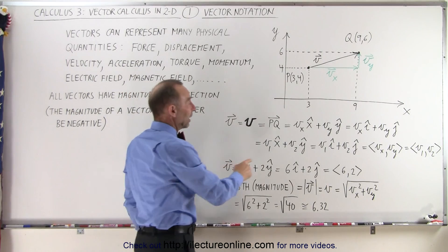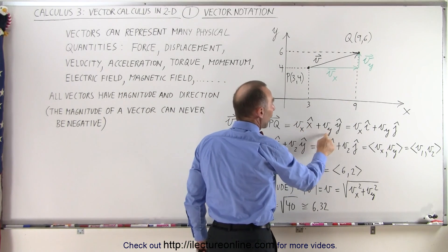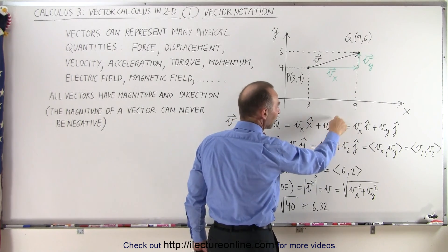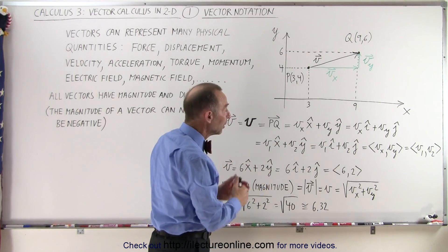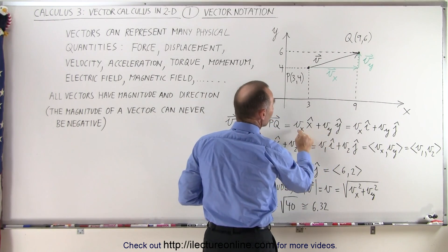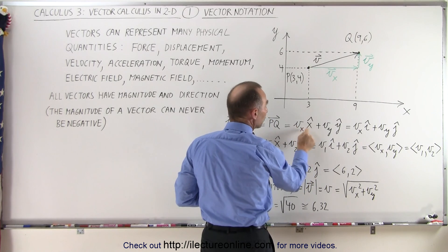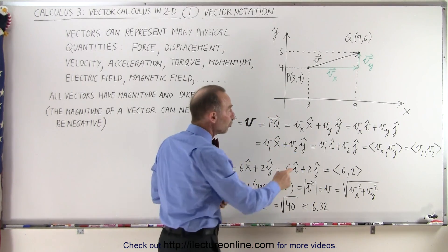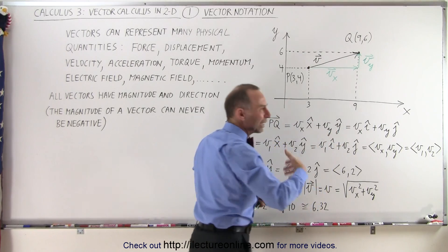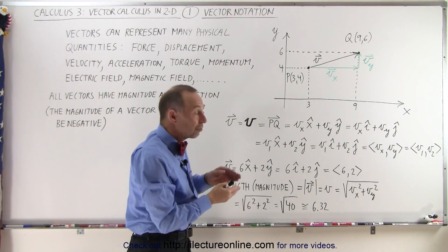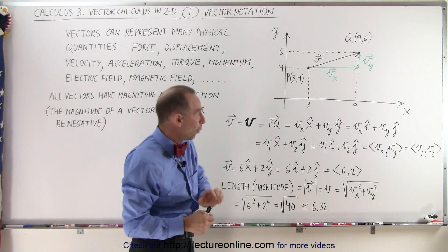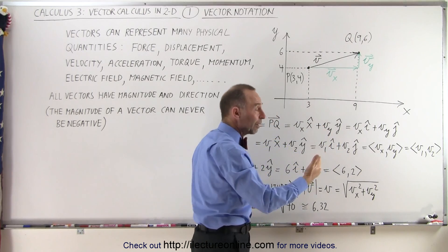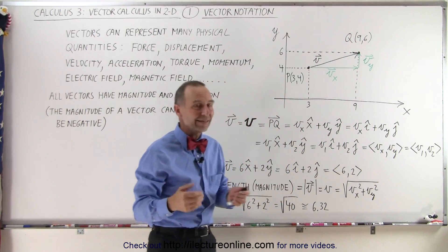We can represent the vector as the sum of its X and Y components. Then we use this symbol right here - either an X with a little hat on it or a Y with a little hat. These symbols represent the direction of the unit of the vector. For example, the X component is pointing in the X direction and the Y component is pointing in the Y direction. This means the unit vector X and the unit vector Y. The unit vector has length equal to 1 and points in the direction of either the X axis or the Y axis. Later in three dimensions, we'll also have a Z unit vector that points in the Z axis direction.